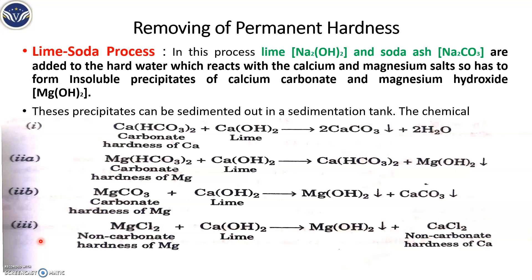As we have seen in my earlier videos, permanent hardness is very much hard to remove. It contains non-carbonate hardness like nitrates, chlorides, sulphates and all — it is very much hard to remove.